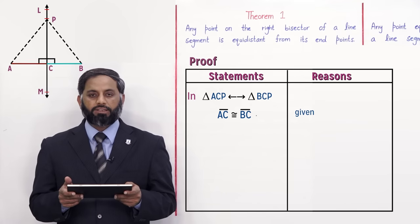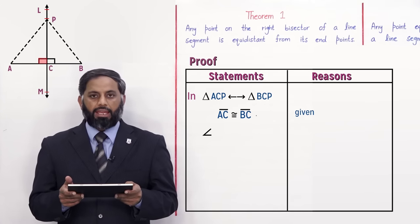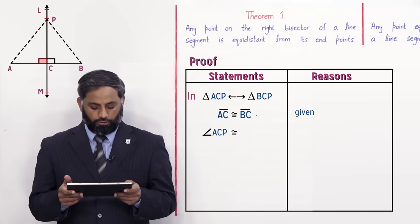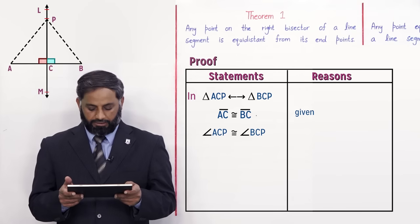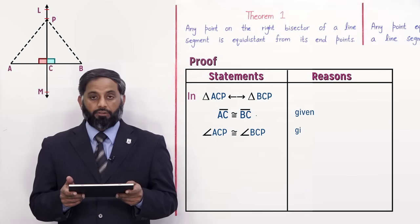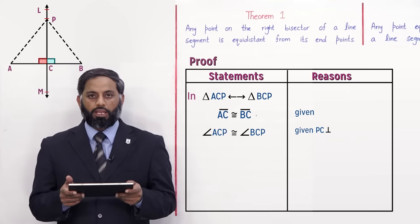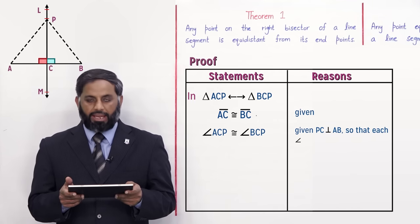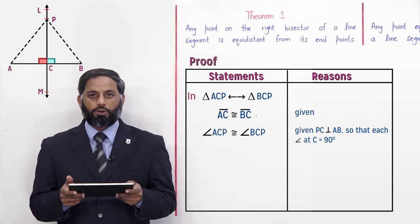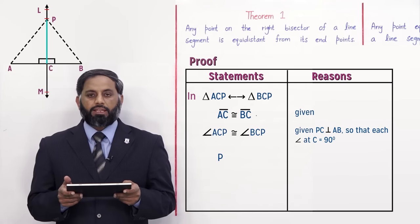Angle ACP is congruent to angle BCP, and the reason is: given PC is perpendicular to AB, so each angle at C is equal to 90 degrees. PC is congruent to PC, and the reason is common.